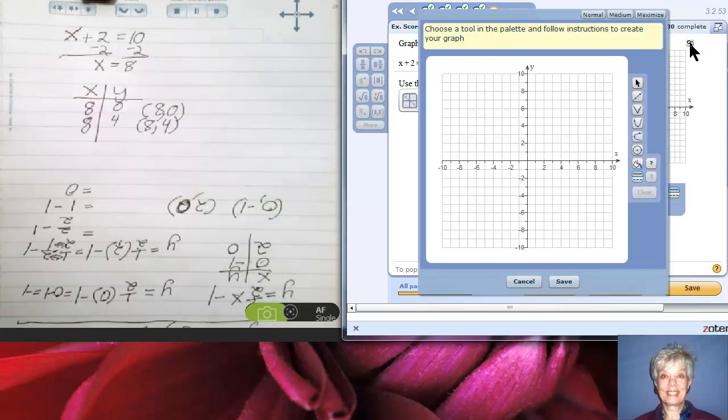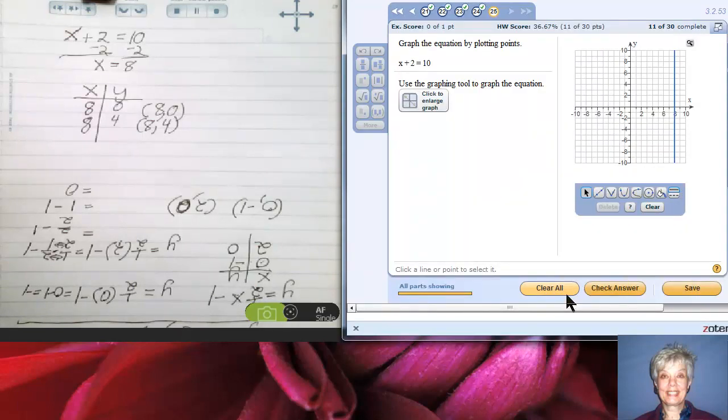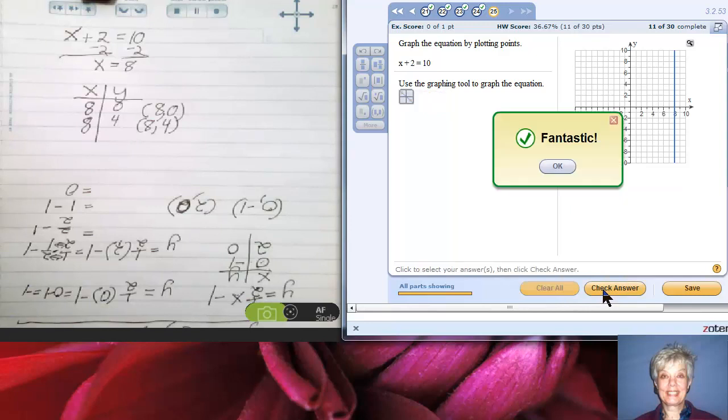So let's graph these two points. Magnifying glass, medium, line tool. First point is (8, 0). Second point is (8, 4). Now that I've clicked on my second point, I have a freestanding line. I save it, I check it. Fantastic.